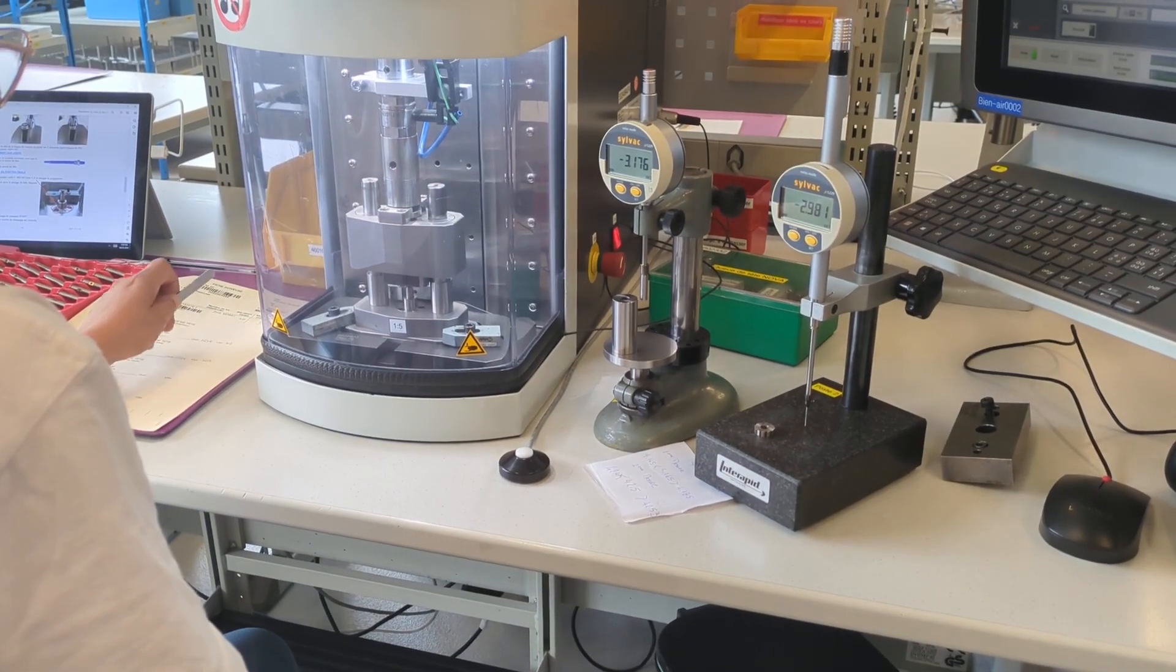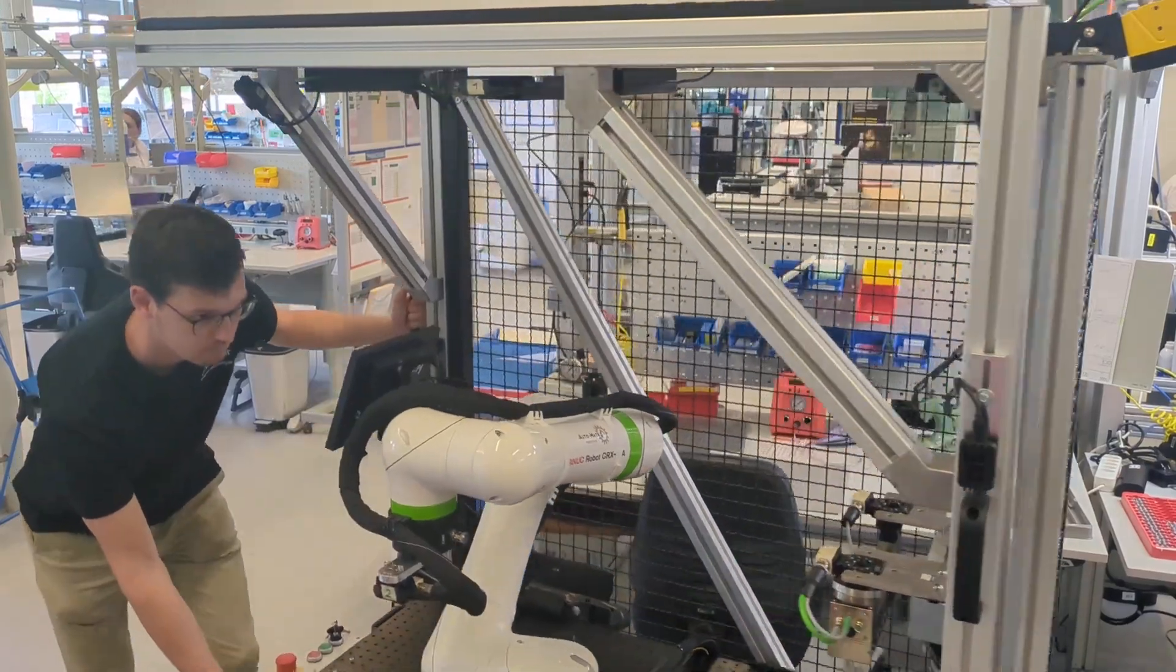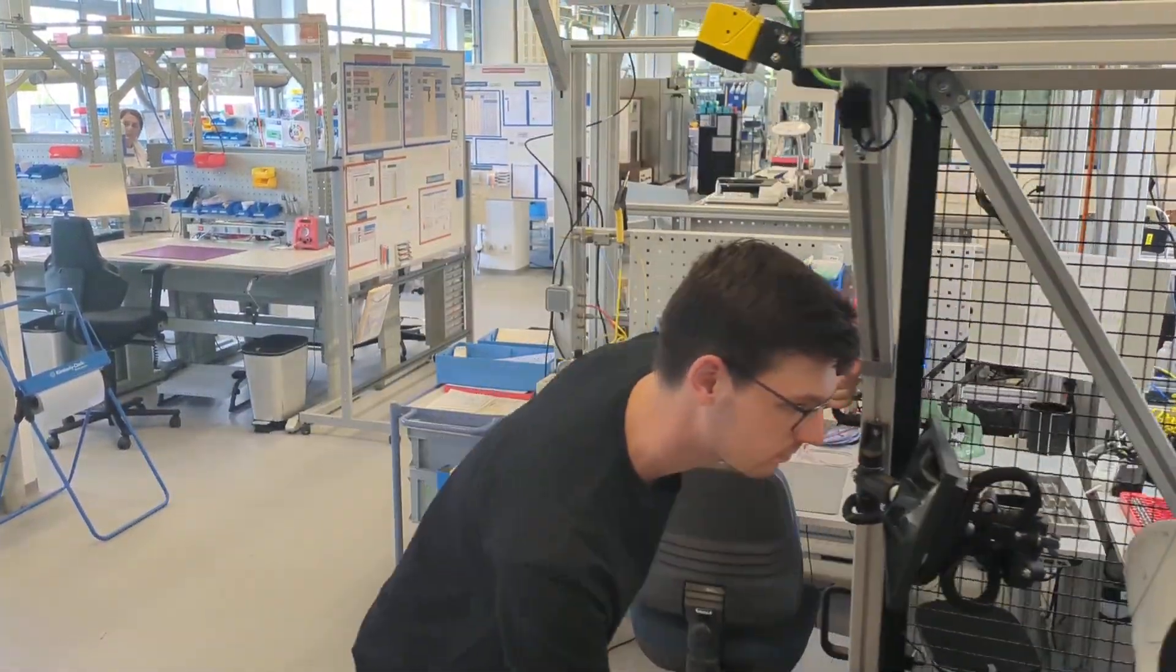Automate Robotics developed a special cell with a collaborative arm that we can very easily move around and place on one workstation or another.